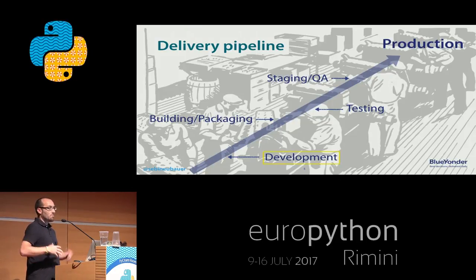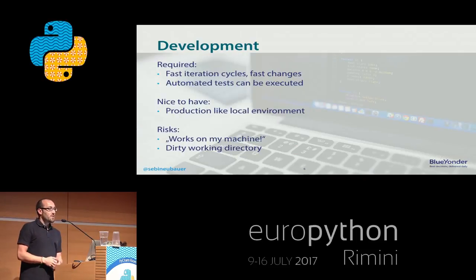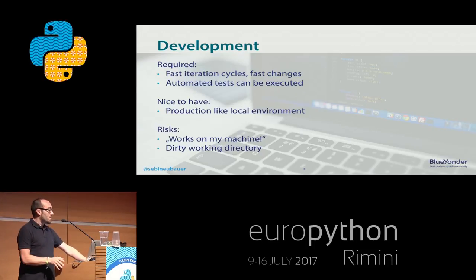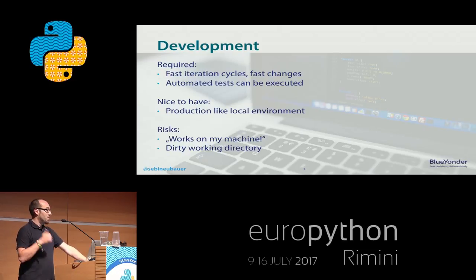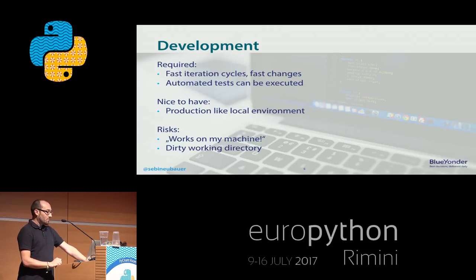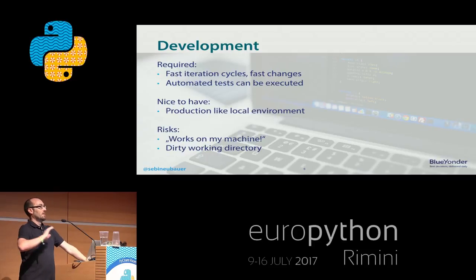Let's start at the beginning with how a normal delivery looks like — we start in development. We have some requirements there. Most of you are developers, so we know what we want in our development stage. We want fast iteration cycles: we want to change something and immediately get feedback on whether it's good or bad. We need to be able to run our automated tests in our development environment.